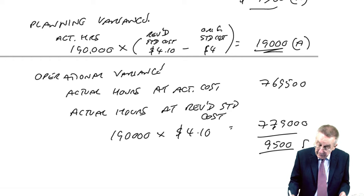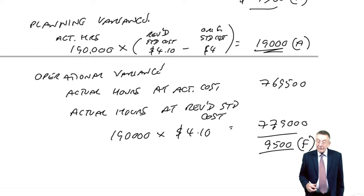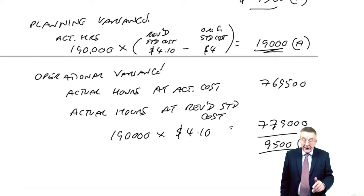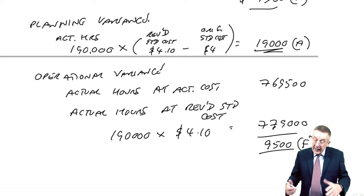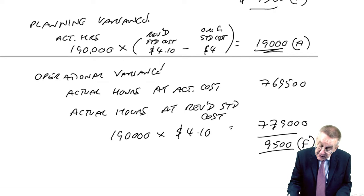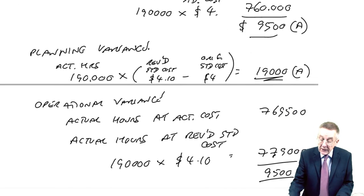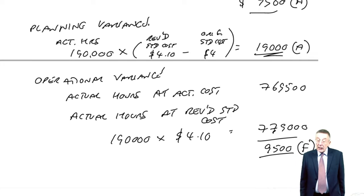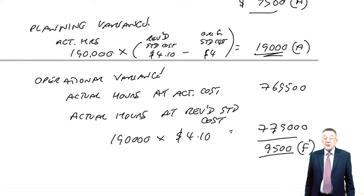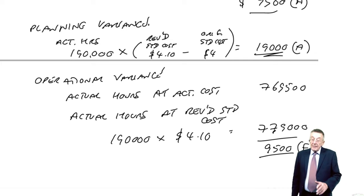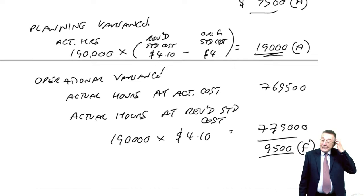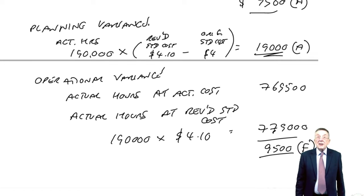And so what's the variance? I think it's 9,500 favourable. Does it add up? 19,000 adverse, nine and a half favourable. The difference is nine and a half adverse. That's right, the difference. The net is nine and a half adverse, which is what the total was. So in total, we're now an hour adverse in its original budget. We've now analyzed it. We're losing 19,000 due to the fact we expected wages to be higher. The manager seems to have done a fairly good job that he's managed, even though we're paying more than the original $4, he's managed to pay a bit less than the $4.10 that we were now expecting. That's rate of pay.